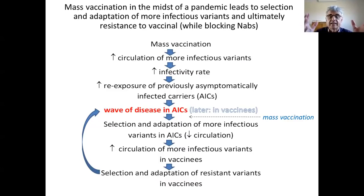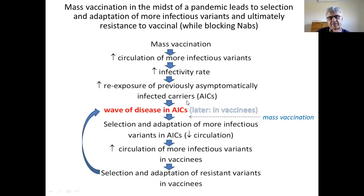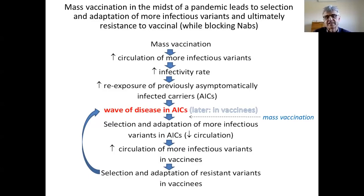The result is that you increase the infection rate in the population. The virus becomes more infectious because more infectious variants are predominantly circulating. If the infectivity rate increases, the likelihood that somebody who got previously asymptomatically infected and is sitting on suboptimal antibodies gets re-exposed to the virus becomes higher and higher. So there is a higher likelihood for re-exposure of previously asymptomatically infected carriers, which will explain why you will now see a wave of disease in a fairly substantial amount of these carriers — their natural antibodies will be suppressed and outcompeted to an extent that makes them susceptible enough to get disease.